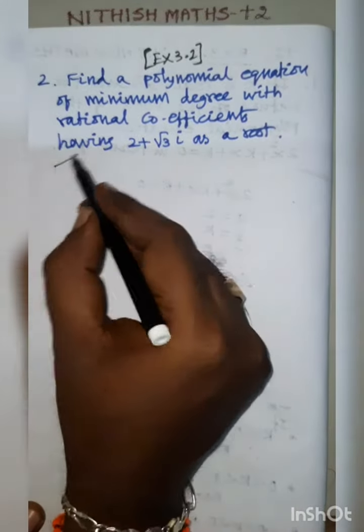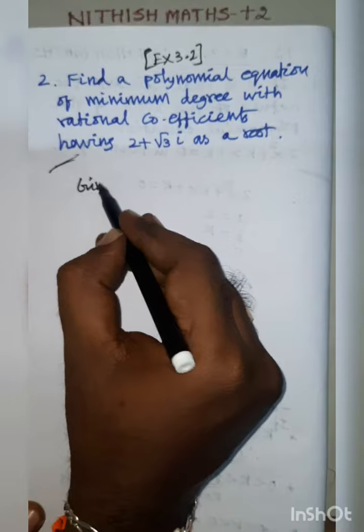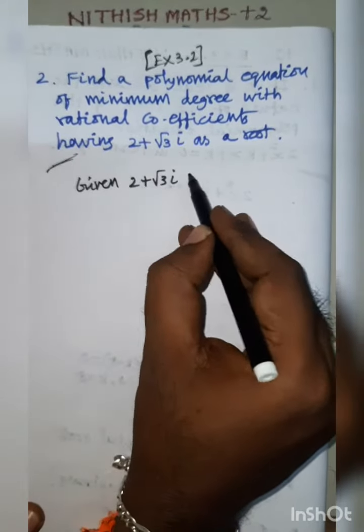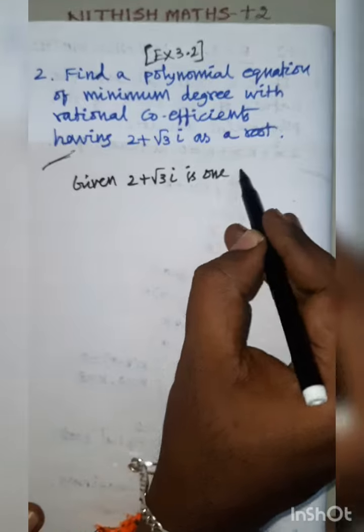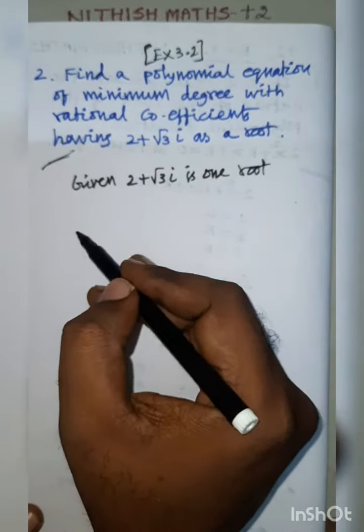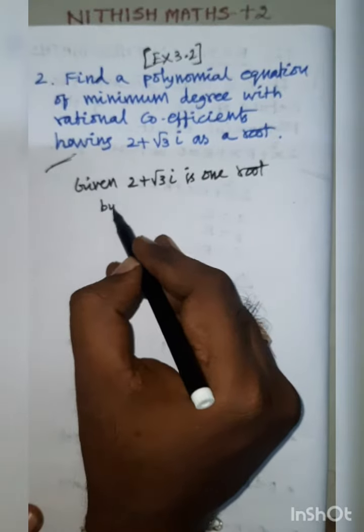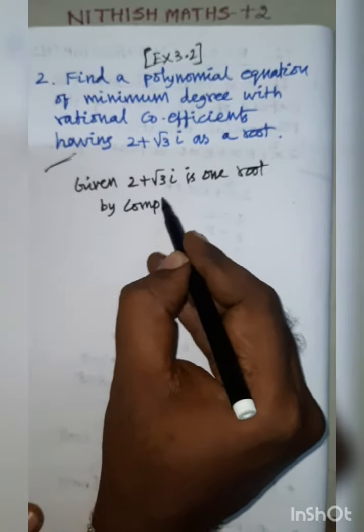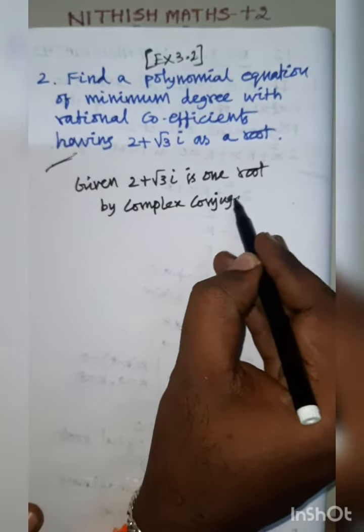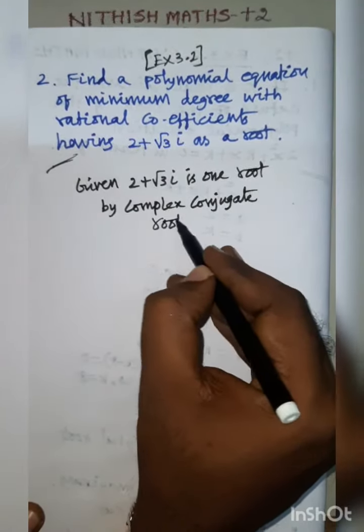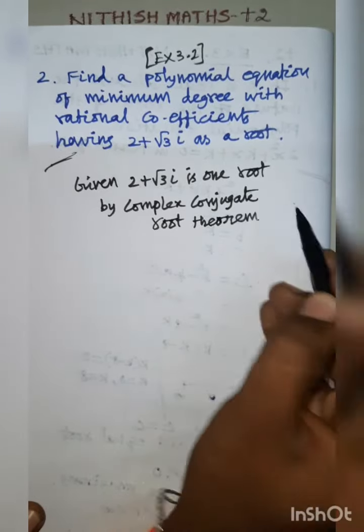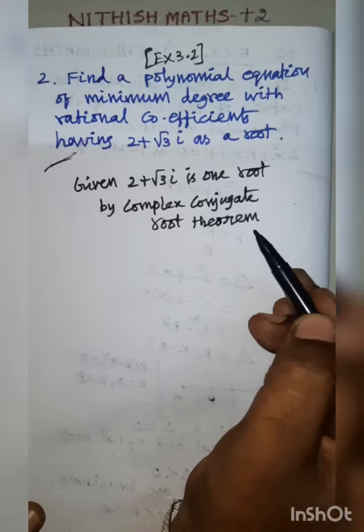Given one root, 2 plus root 3 i is one root. By Complex Conjugate Root Theorem, if z is a root, z bar is also a root.